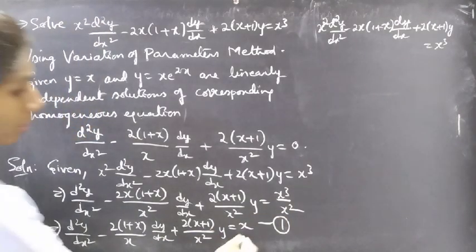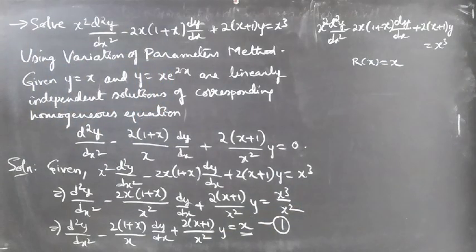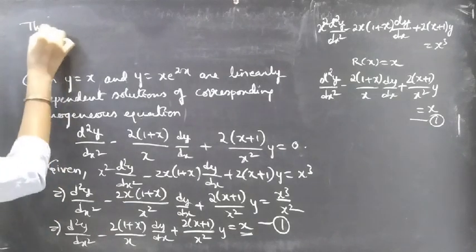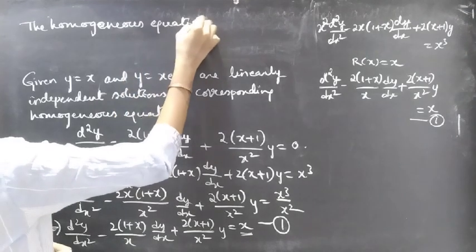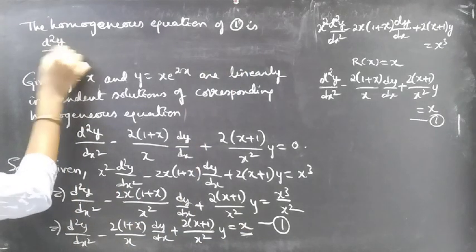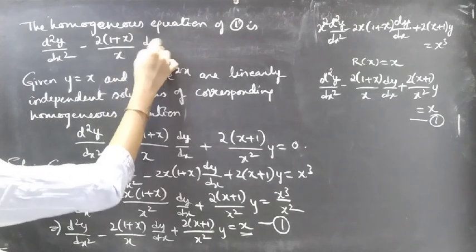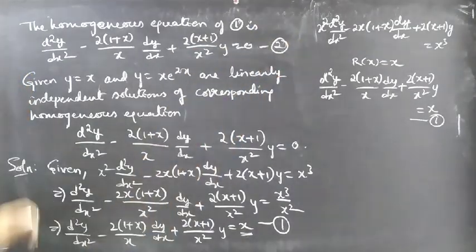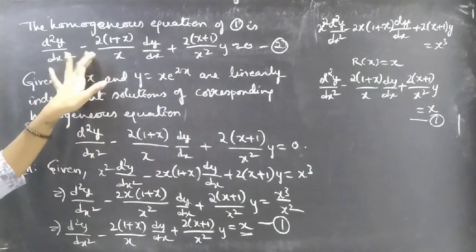Here r(x) = x. The homogeneous equation of equation 1 is obtained by setting r(x) = 0, giving d²y/dx² minus 2(1+x)/x · dy/dx plus 2(x+1)/x² · y = 0. Consider this as equation 2. We are given that y = x and y = xe^(2x) are linearly independent solutions of homogeneous equation 2.